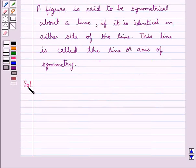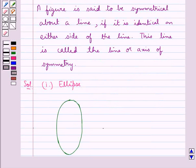Let's move on to the solution now. First we have the figure ellipse. We will find the line of symmetry for ellipse. This is an ellipse. Now we will find the lines of symmetry for this ellipse.